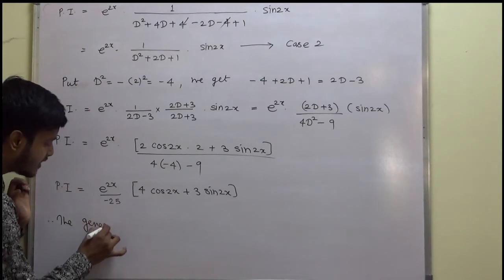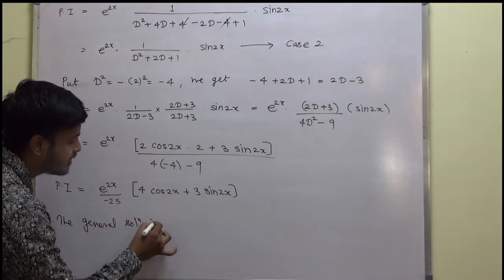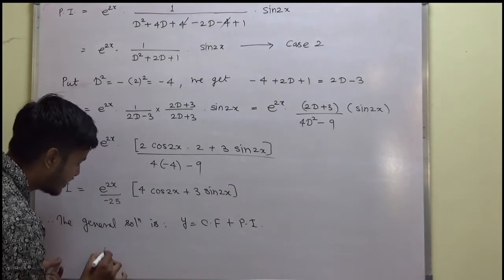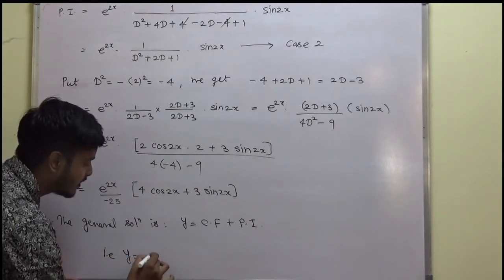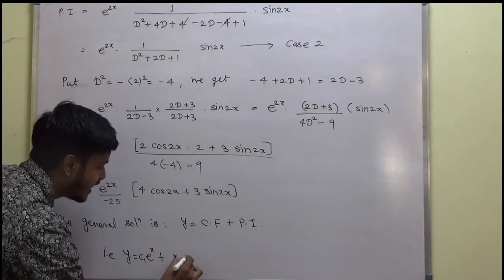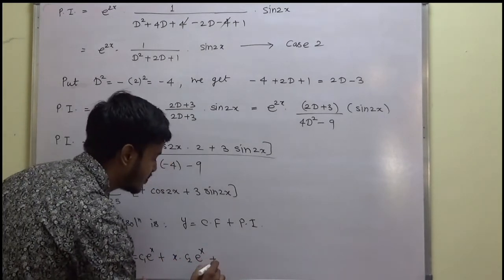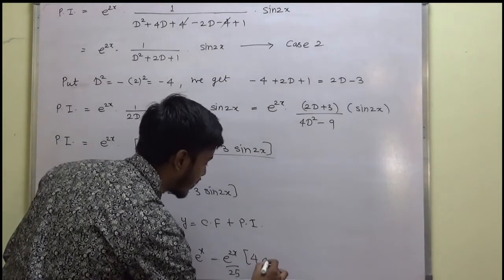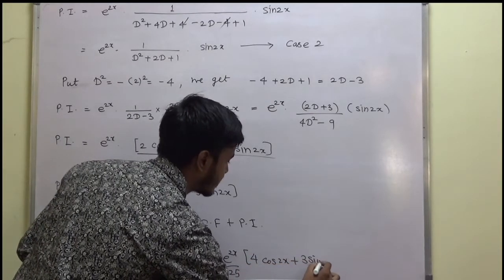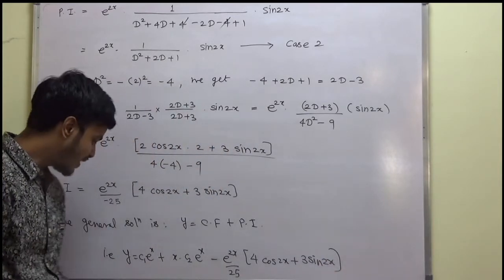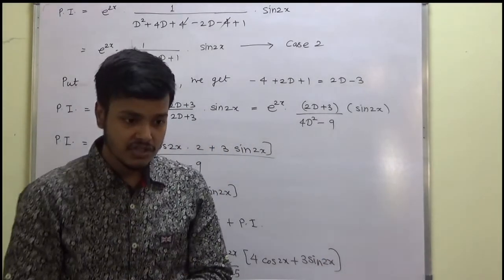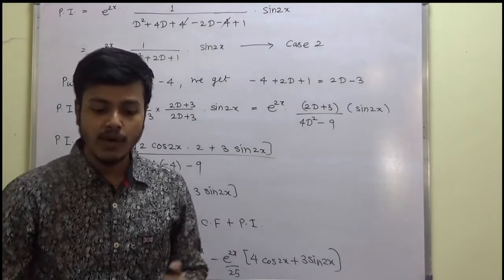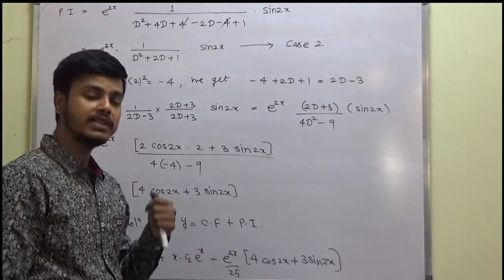We have now found both CF and PI, so we can write down the general solution. The general or complete solution is Y equals CF plus PI. That is, y equals C1 e to the power x plus x into C2 e to the power x, plus PI which is e to the power 2x divided by 25 times (4 cos 2x plus 3 sin 2x), where C1 and C2 are arbitrary constants.